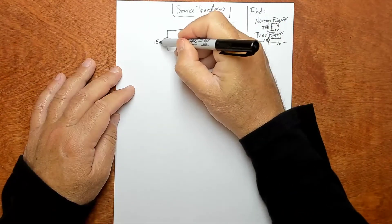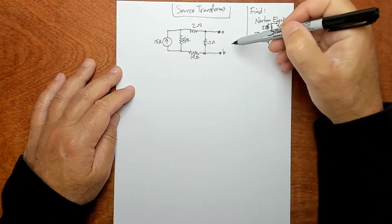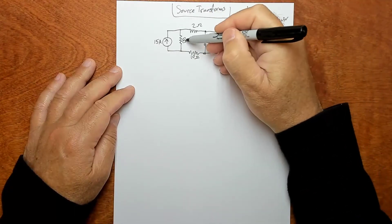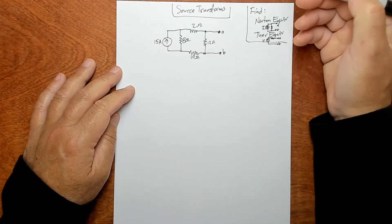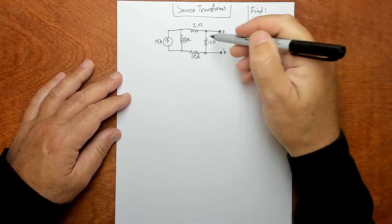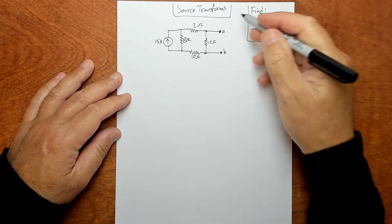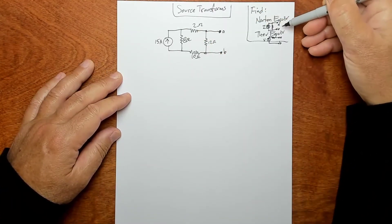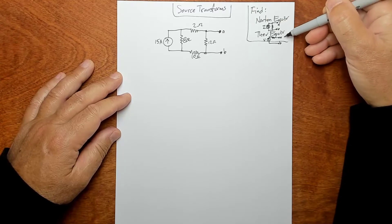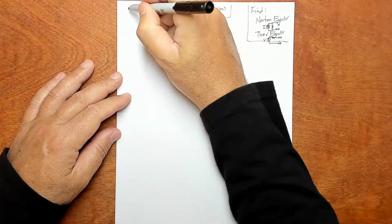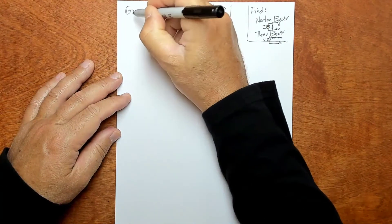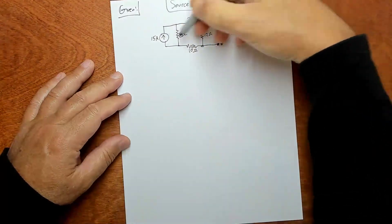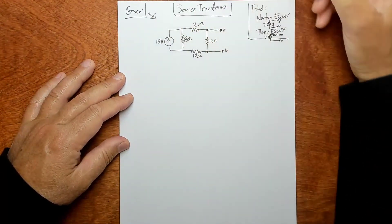We have a 15-amp current source, an 8-ohm resistor, a 2-ohm resistor, a 12-ohm resistor, and a 10-ohm resistor. We're going to do a bunch of source transforms to get the Norton equivalent, and then do one final source transform to get the Thevenin equivalent. All of this stuff right here is given.